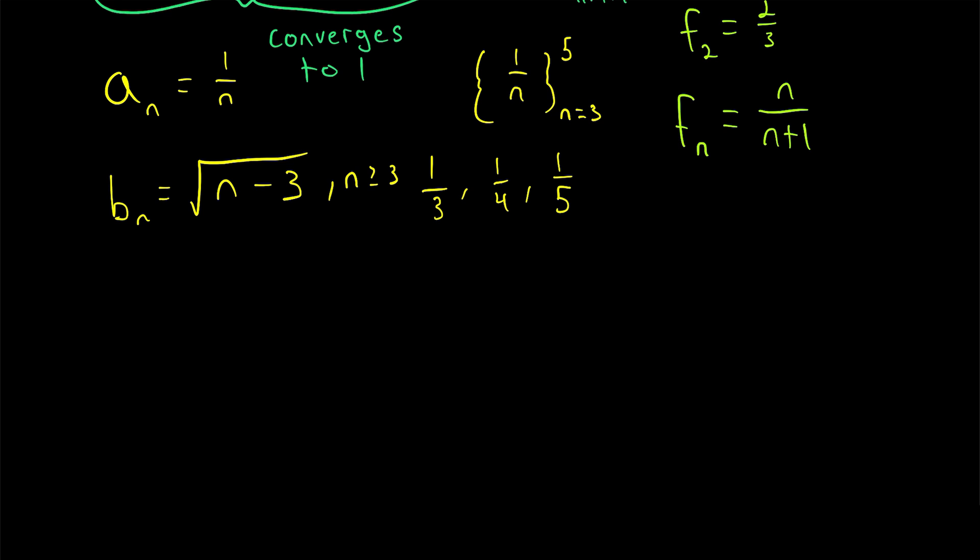A sequence that doesn't converge is said to diverge. For example, the nth term of this sequence is equal to n. This sequence diverges. Its terms get bigger and bigger. So in fact, we would say that this sequence not only diverges, but it diverges to positive infinity. Some sequences diverge to negative infinity, and some divergent sequences don't diverge to positive or negative infinity.